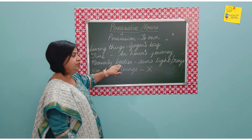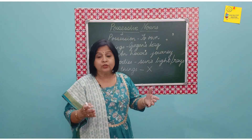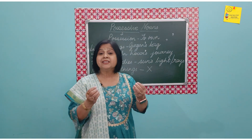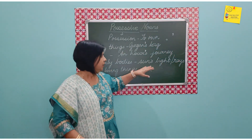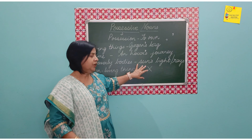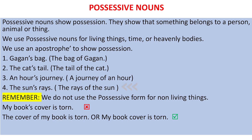We can also use possessives for heavenly bodies, which we also call celestial bodies — what we see up in the sky: the sun, the moon, the stars. So we can say the sun's light or the sun's rays. Again, we are just shortening it.